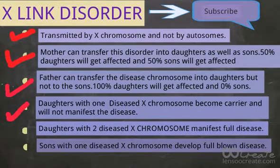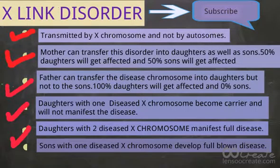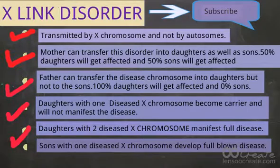Point number five: daughters with two diseased X chromosomes manifest the full-blown disease. If the daughter has two diseased X chromosomes, she will develop full-blown disease. Point number six states that sons with one diseased X chromosome also develop full-blown disease.